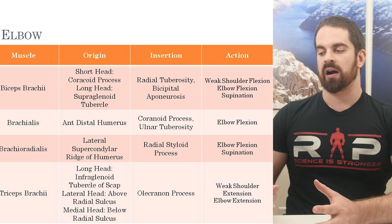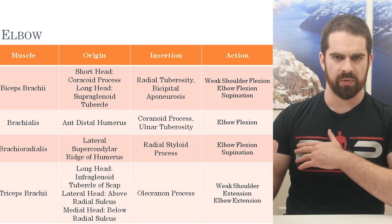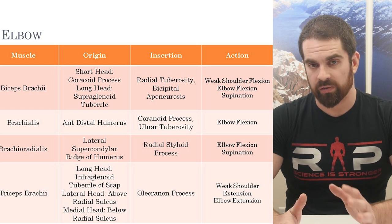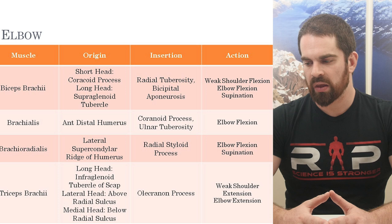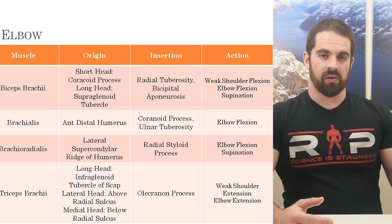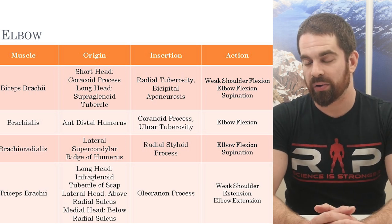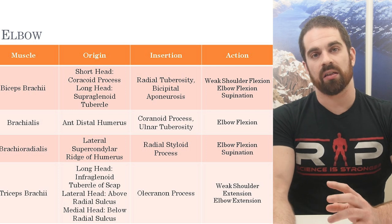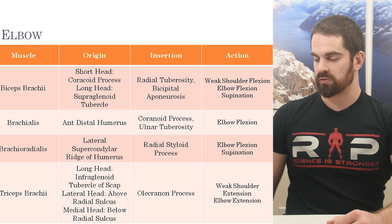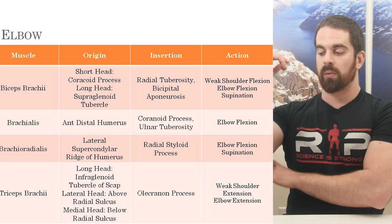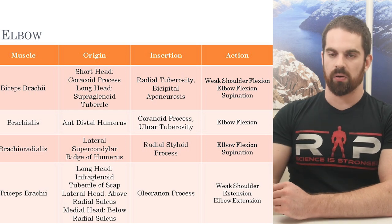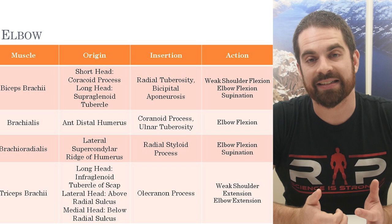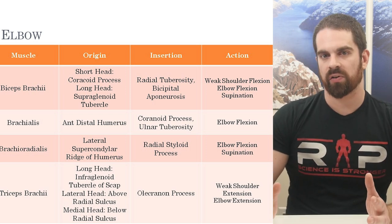Back to business. The biceps brachii are our primary elbow flexors, help with supination, and assist shoulder flexion. The brachialis is almost exclusively for elbow flexion. The brachioradialis is involved in elbow flexion and supination. On the posterior side, the triceps brachii — three heads — provide weak shoulder extension but are primarily our elbow extensors. So the biceps are the main flexors and the triceps are the main extensors — these two muscle groups are antagonistic, meaning they oppose each other.